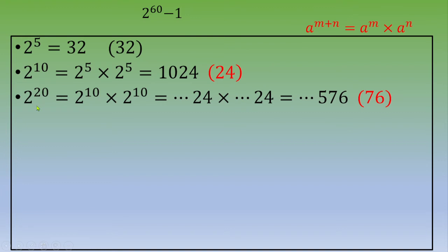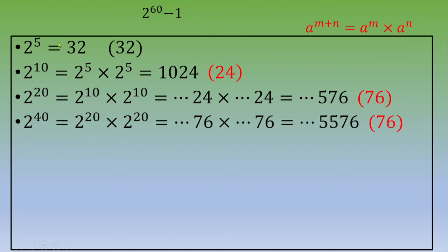Next step: calculate 2 power 40. According to the rule, this is 2 power 20 times 2 power 20 — a number ending in 76 times the same number ending in 76. The result is a number ending in 76, so we keep 76.